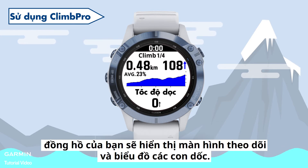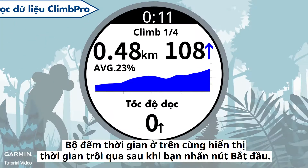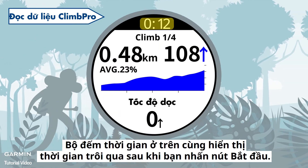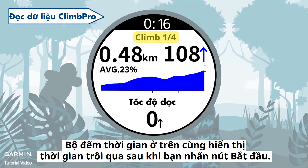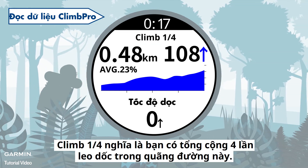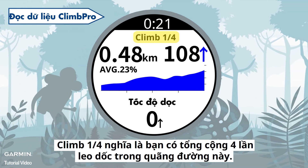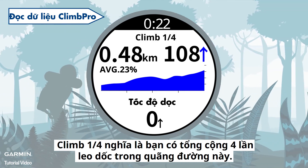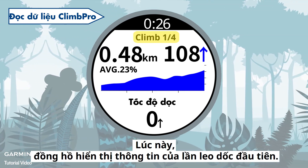After you finish the setup, when you use navigation your watch will display ascent planning and monitoring screens. Here is how to read the graph and chart. The timer on the top shows the passage of time after you press the start button. 'Climb 1/4' means you have a total of four climbs in this course, and the watch is now showing the information for the first climb.